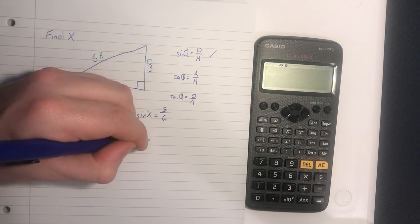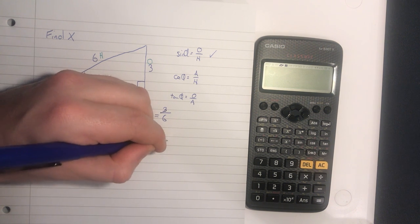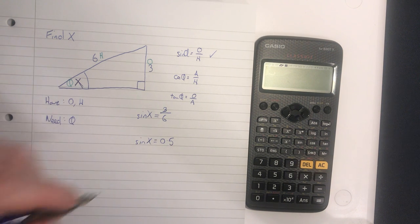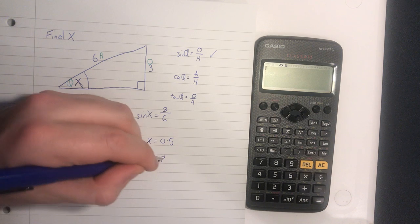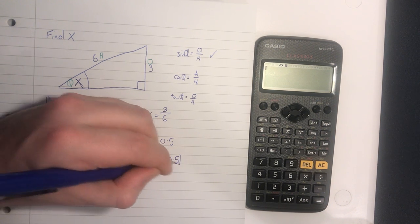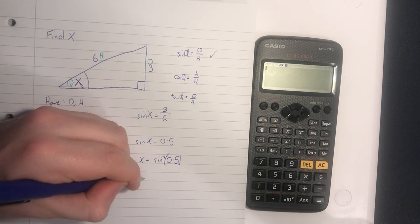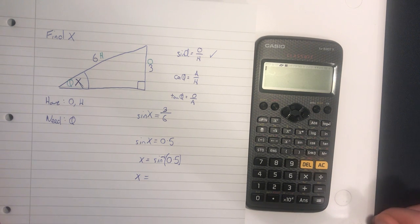So sine X is equal to 0.5. X is equal to sine inverse of 0.5. We probably should put that in brackets, so X is equal to...